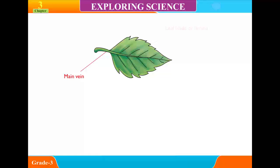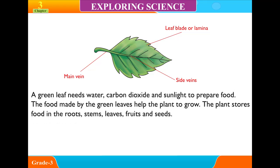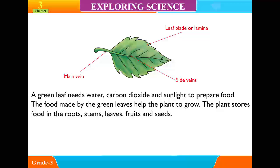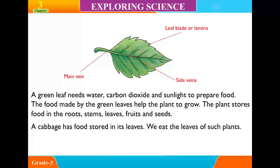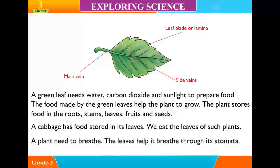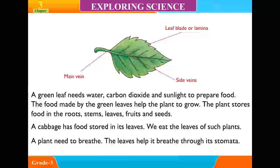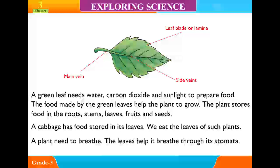On the underside of the leaf, there are tiny pores called stomata. The stomata throw out extra water from the leaves. A green leaf needs water, carbon dioxide and sunlight to prepare food. The food made by the green leaf helps the plant to grow. The plant stores food in the roots, stems, leaves, fruits and seeds. A cabbage has food stored in its leaves — we eat the leaves of such plants. A plant needs to breathe, and the leaves help it breathe through its stomata.